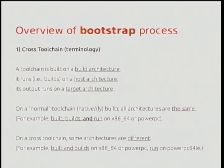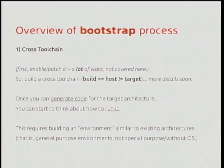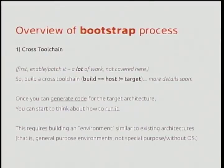On a cross-toolchain, some of those architectures are different. For example, you may want to change the target architecture — so instead of running on x86 or PowerPC, you want to run on PowerPC 64 little-endian. The very first thing you have to do is the patches for the toolchain to enable the new architecture. The toolchain guys do that. So you build the cross-toolchain using their patches, with the same build and host architectures — say it builds and runs on x86 — but the target it generates is for the PowerPC 64 little-endian architecture.